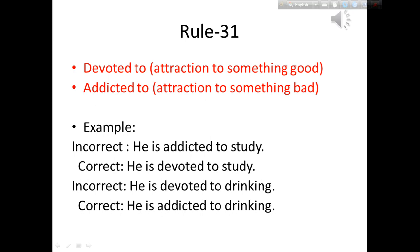Let's start with rule number 31. Here we have two words: 'devoted to' and 'addicted to'. 'Devoted to' means attraction to something good, and 'addicted to' means attraction to something bad. The first example is: he is addicted to study. Since devotion is attraction to something good and addiction is attraction to something bad, attraction to study is a good thing, so we will use 'devoted' here.